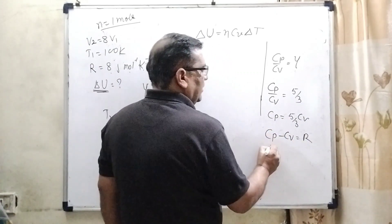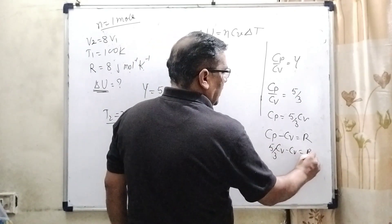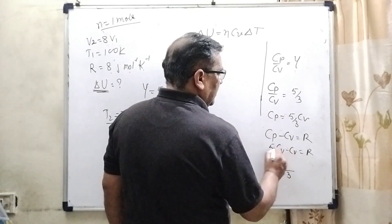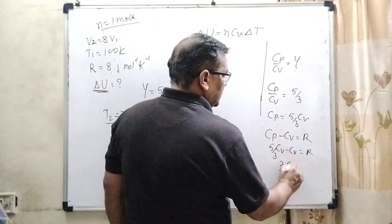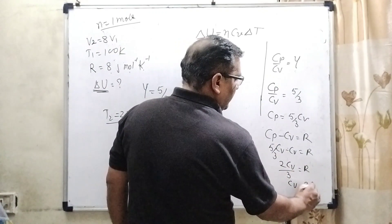Now substitute the value of Cp, 5 by 3 Cv minus Cv equal to R. Here it can be written as 5 minus 3 that is 2, Cv equal to R. Then Cv can be written as 3R by 2.